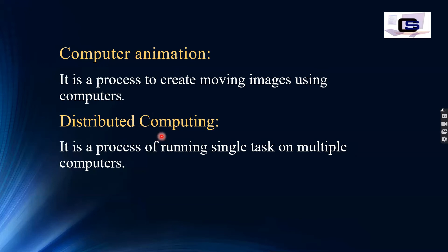Distributed computing is a process of performing a single task on multiple computers. It says that one task is divided across multiple computers — we call this process distributed computing. For example, in a college lab room, there are three or four computers. It is a process of handling different sections, performing one task using multiple computers.